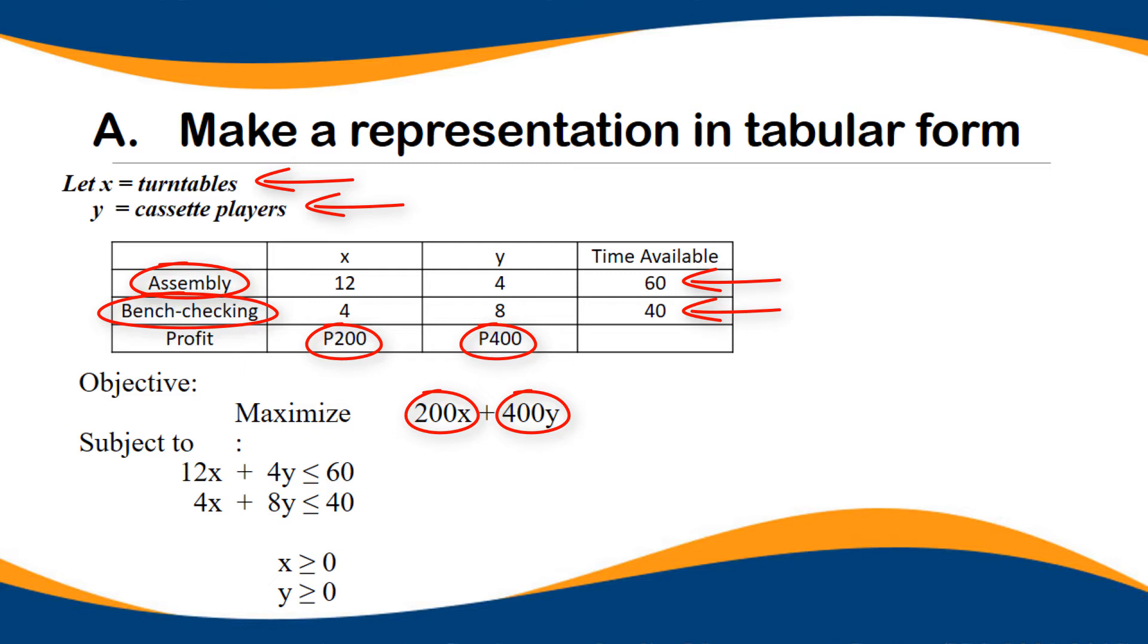For assembly time, we have available hours of 60 and for bench checking, 40. So that's what we write in time available. Then we have the profit. For each turntable, we have 200, and for each cassette player, we have 400.